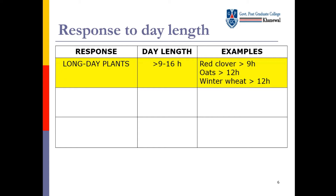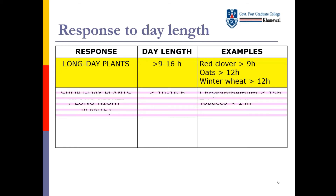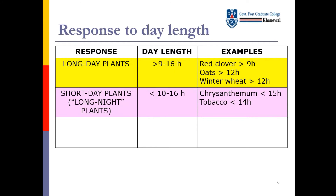Long day plants — اس میں جو day length ہوتی ہے وہ 9 to 16 hours کی ہوتی ہے. اگر ہم examples کی بات کریں: red clover (9 hours), winter wheat (12 hours), etc.